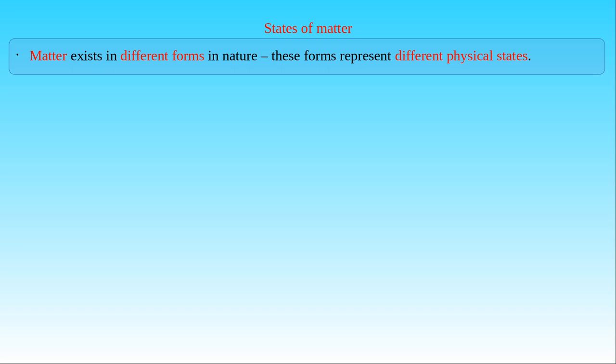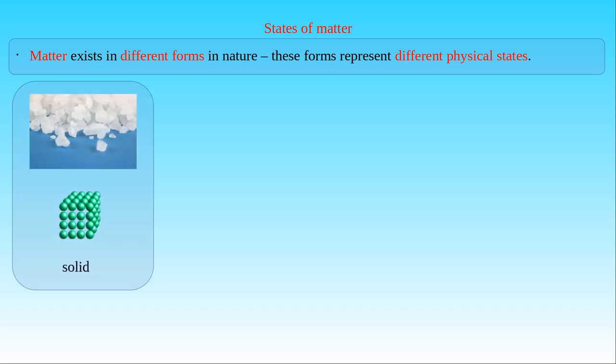The first state we consider here is the solid state of matter. As an example, some salt crystals can be seen here. In a solid, particles are packed tightly together, and the chemical bonds prevent them from moving, allowing the particles to have only small vibrations. Atoms and molecules form some kind of lattice structure, as depicted in the figure. Amorphous materials lack such structure, but the chemical bonds can still keep the particles in their fixed position.